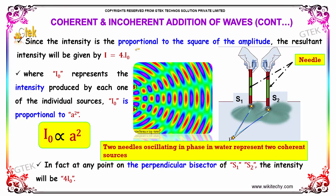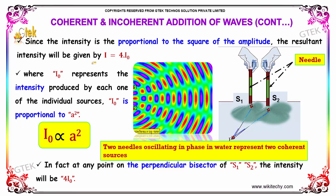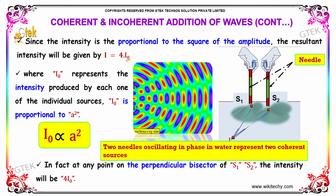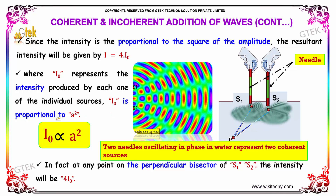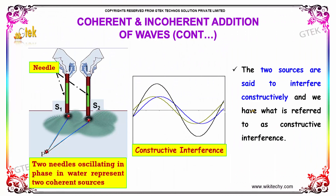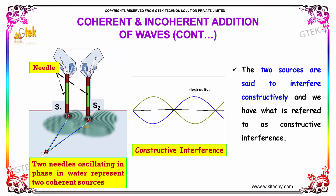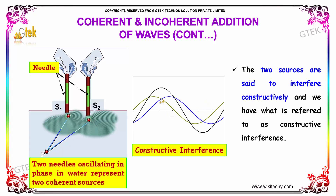Since the intensity is proportional to the square of the amplitude, the resultant intensity will be given as I = 4I₀, where I₀ represents the intensity produced by each one of the individual sources, and I₀ is proportional to A². In fact, at any point on the perpendicular bisector of S1 and S2, the intensity will be 4I₀. The two sources interfere constructively, and we have what is referred to as constructive interference.